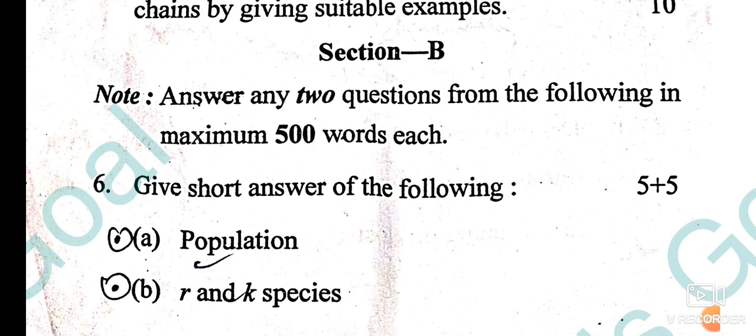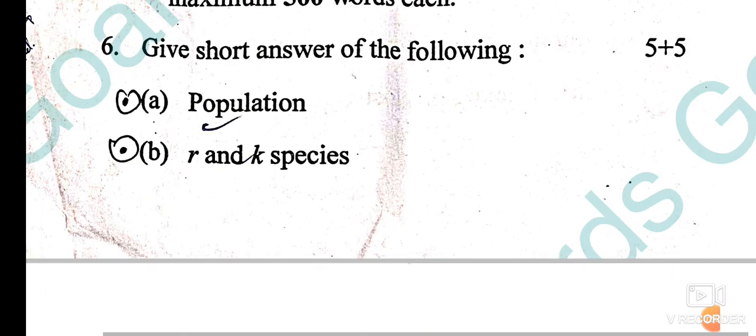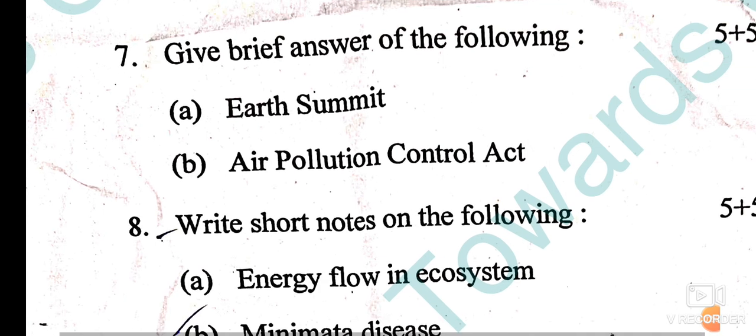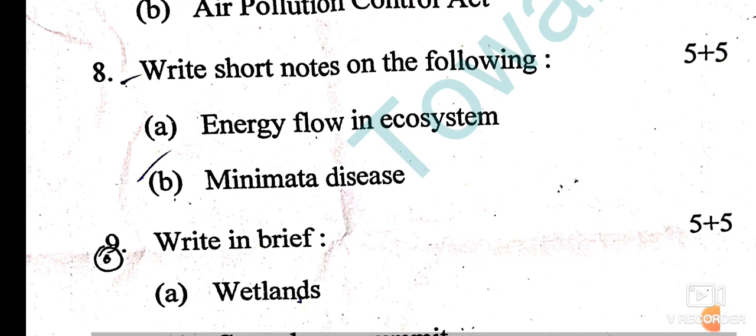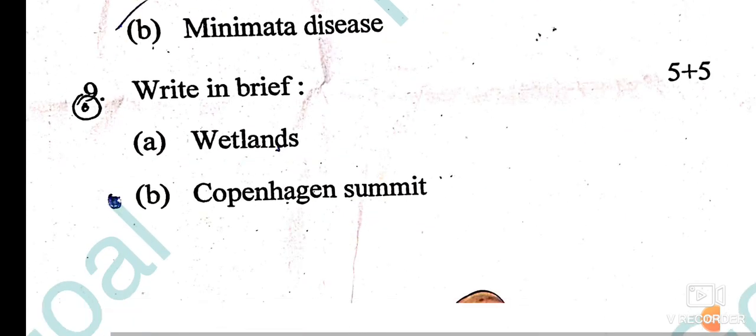In the next section, you have to attempt 2 questions — give brief answers to the following: What is population? What is r and K? What is air pollution control? Energy flow in ecosystem? Minamata disease? Write briefly on wetlands and the Copenhagen Summit.